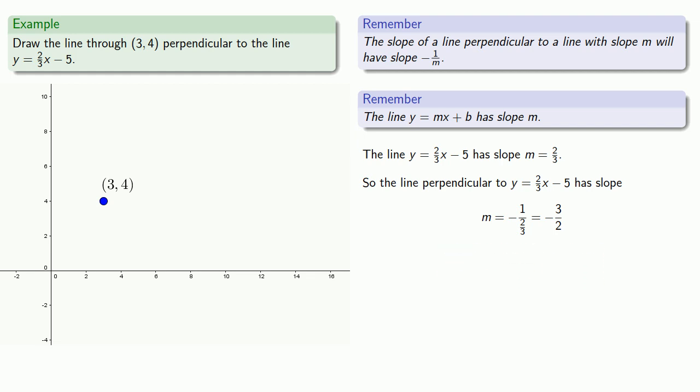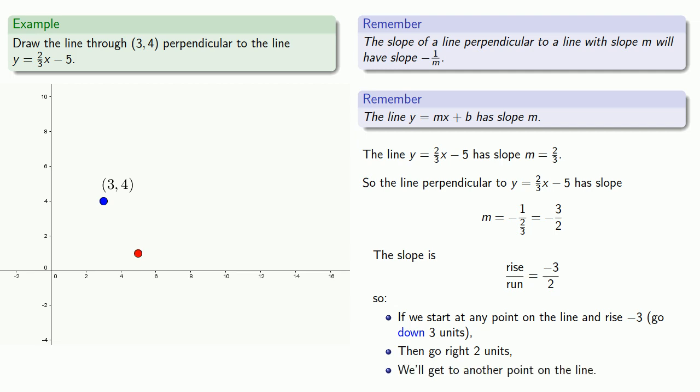And so we can read our slope as a rise over run of minus 3 over 2. And so this means that if we start at any point on the line, well how about this one, and rise minus 3, go down 3 units, then go right 2 units, we'll get to another point on the line.